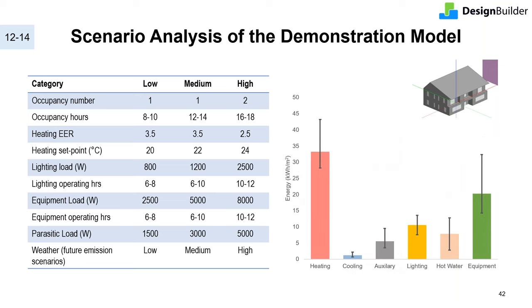Scenario results can also be plotted as box plots for different end uses separately. In this graph, the bar shows the median value and the error line shows the low and high range estimate. Some end uses are more uncertain than others.